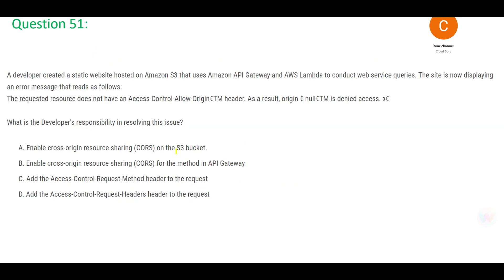Next question: there are three actors — S3, API Gateway, and Lambda. You are getting an error message. When you're not sure how to answer, apply common sense. In this case, you can see the word 'origin' in the error. Immediately eliminate any options that don't contain the word 'origin' — options C and D are gone. Now you have two options: A and B.